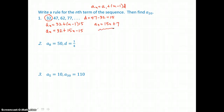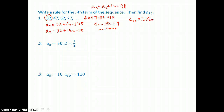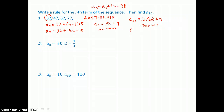Here's our rule, and now we can use it to find the 20th term. All we have to do is substitute 20 for n in our rule and simplify: 300 plus 17 gives us the 20th term in this sequence, which is 317.